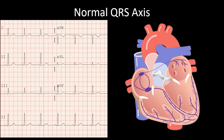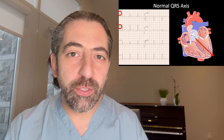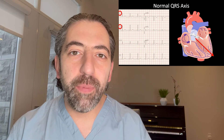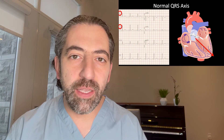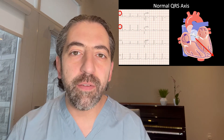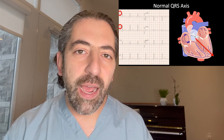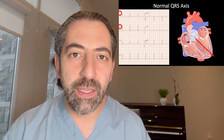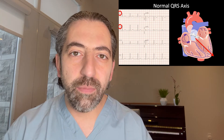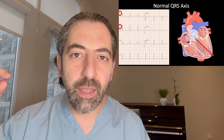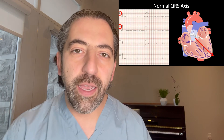So in summary, if you look at leads 1 and lead 2 and they're both positive, the axis of the QRS is normal. The same applies to the P-wave. If the P-wave is positive in leads 1 and lead 2, it must be coming from the top right, traveling towards the bottom left, meaning it's likely coming from the sinus node.